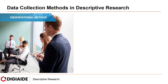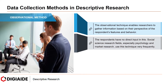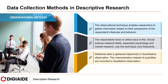And finally, the observational method. This technique enables researchers to gather information based on their perspectives of the respondents' features and behavior. The respondents have no direct input in this. Social science research fields, especially psychology and market research, use this technique very frequently. Statistical data is gathered objectively in quantitative observation, and the characteristics instead of quantities are recorded in qualitative observation. The observations are made and recorded from afar by researchers and conclusions are drawn accordingly.